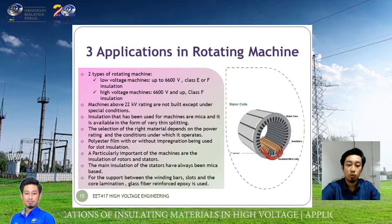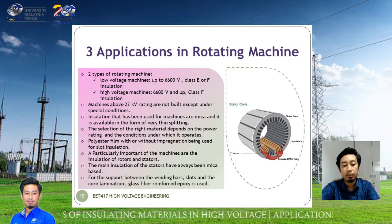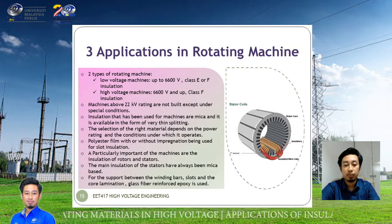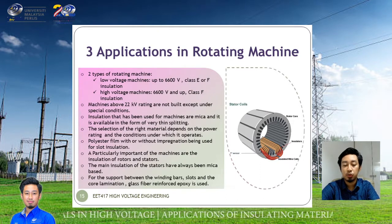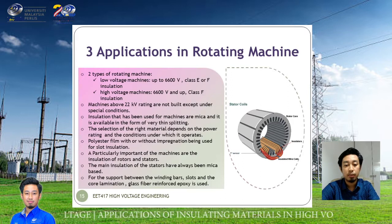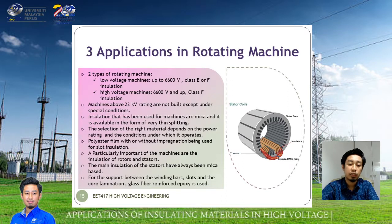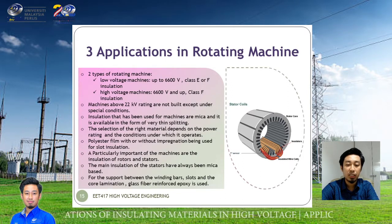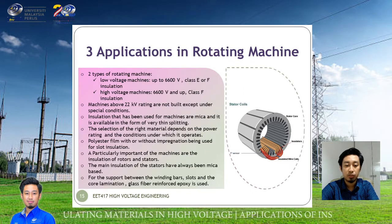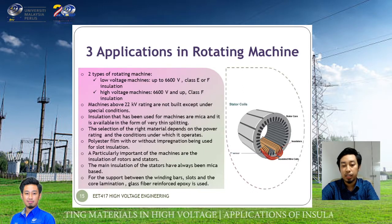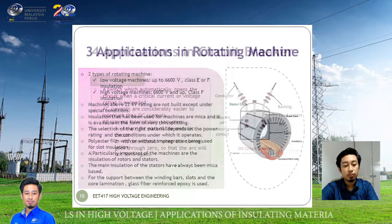Particularly important is the insulation for the rotor and the stator. The main insulation of the stator has always been mica-based — you should remember that the insulation of the stator is always mica-based. For support between the winding bar slot and the core, elimination glass fiber reinforced epoxy is used.